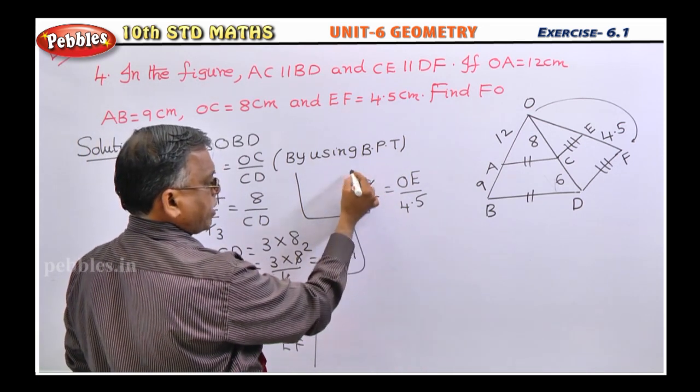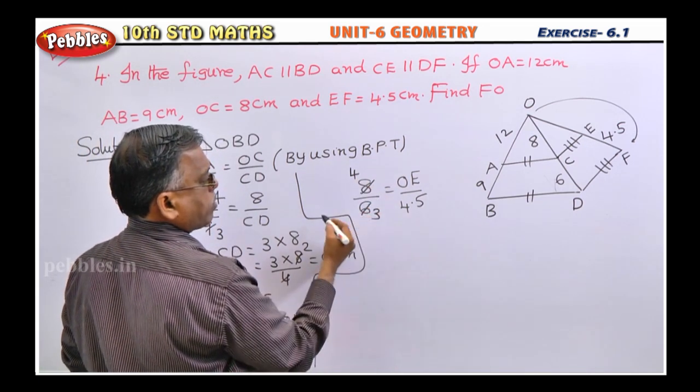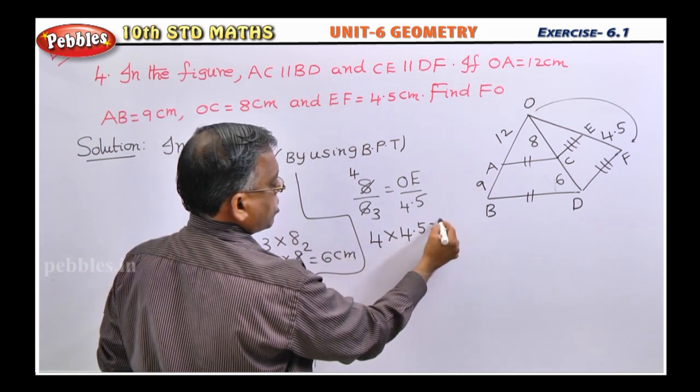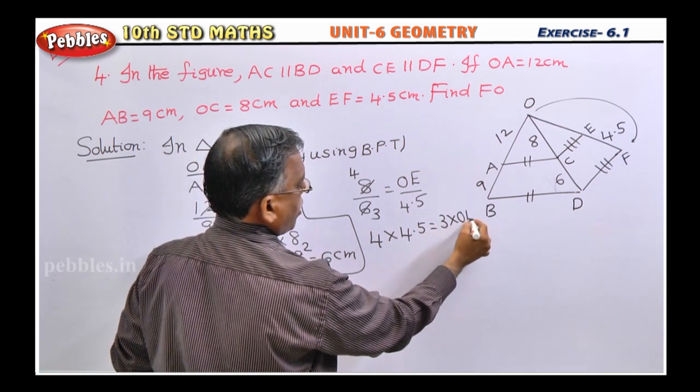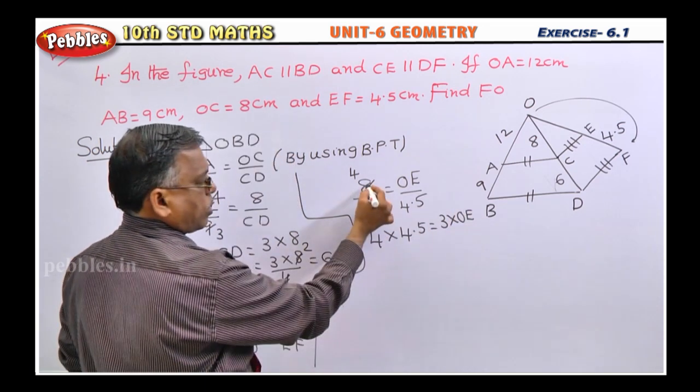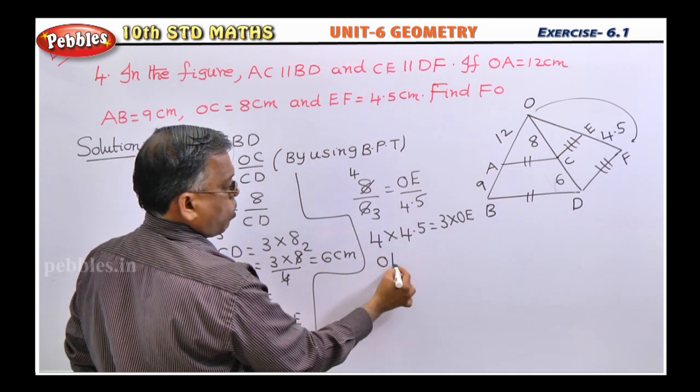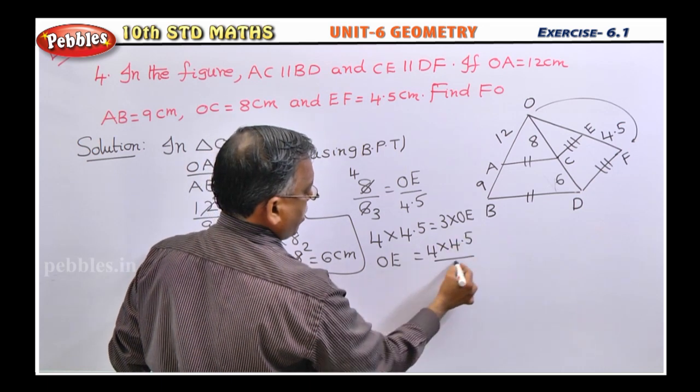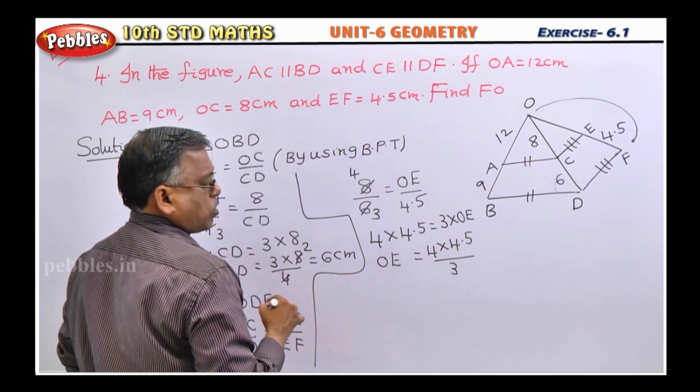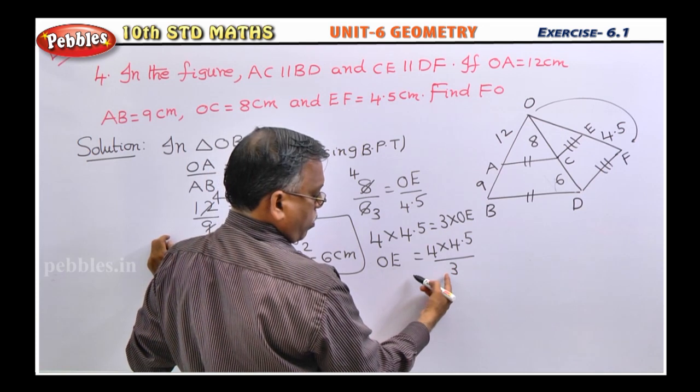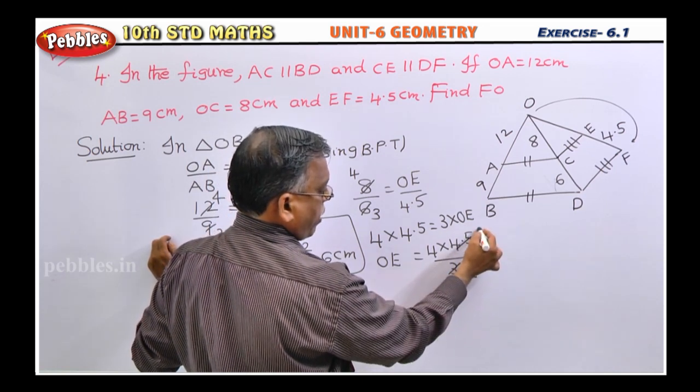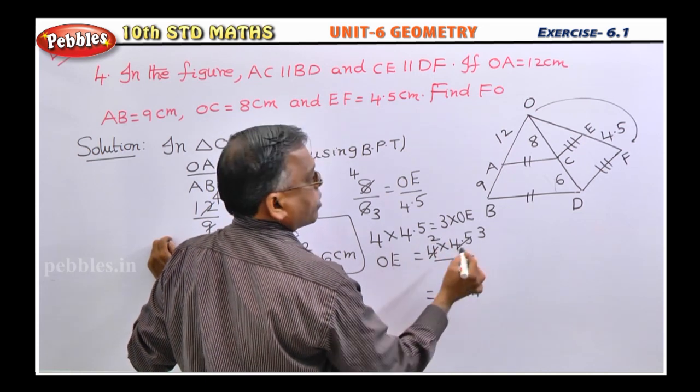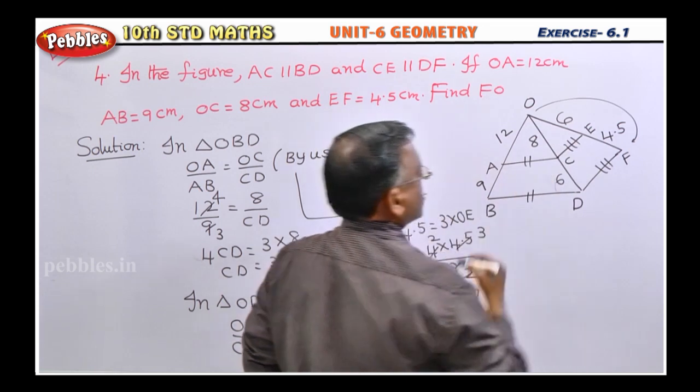Now, here, with two table I can cancel. 4 times, three times. Cross multiply. 4 into 4.5 is equal to 3 into OE. This will come here. This will go this side. Now, what is OE? 4 into 4.5 by 3. So, listen. This will go 1.5 times, 2 times, 2 times. This is 1.5, 3 times. 2 ones, 2 twos. Again, this is 6 centimeter. So, this we got it as 6 centimeter.